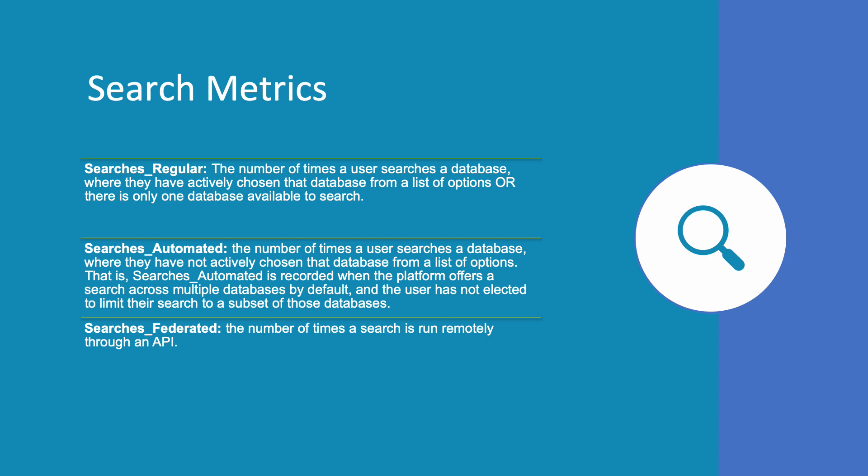Let's take a closer look at the search metrics. Searches regular shows the number of times a user searches a database where they have actively chosen that database from a list of options.